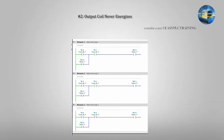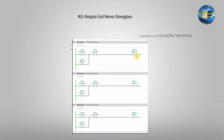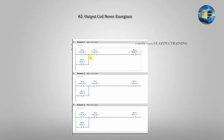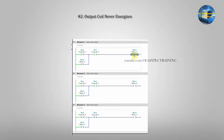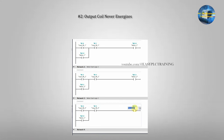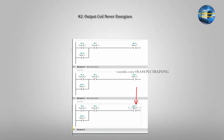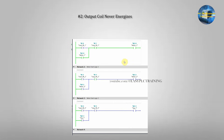Example 2: Output Never Energizes. The second mistake — everything looks fine but the output coil never turns on. Causes include: wrong tag, overlapping outputs, or the condition is false. To fix this, go online and check the green execution path. Replace the wrong tag and remove any duplicate coils. A very important tip: never use the same output coil in multiple rungs.